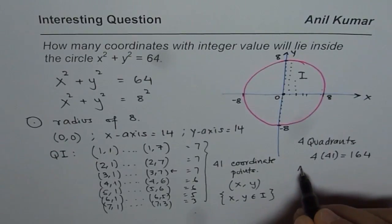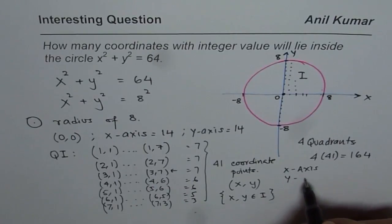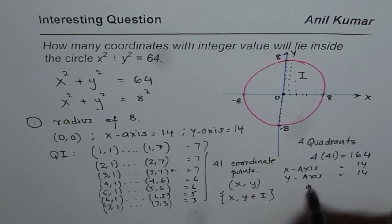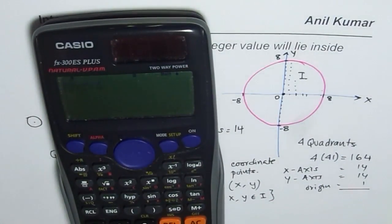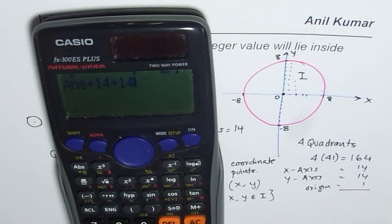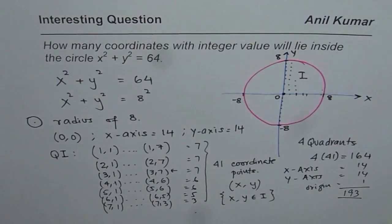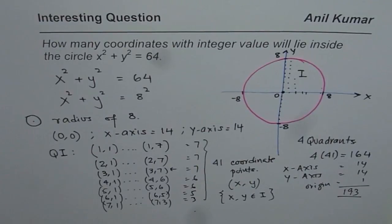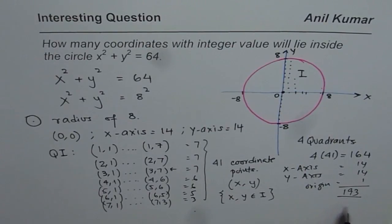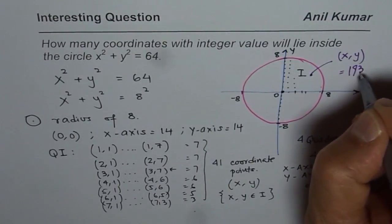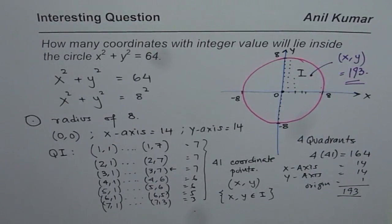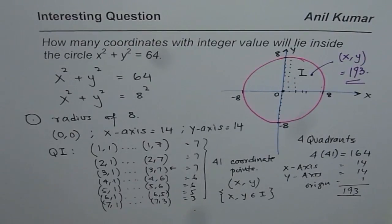So the total is 164 + 14 + 14 + 1 = 193. Therefore, 193 is our answer — the total number of coordinate points with integer values inside the circle x² + y² = 64. I hope you find it very interesting. Thank you, and all the best.